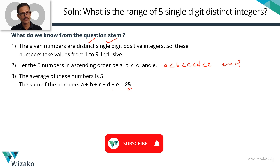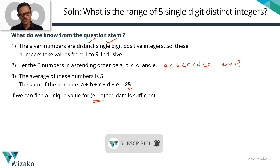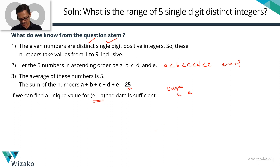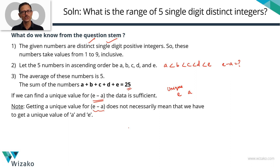The data is sufficient if we can get a unique value for e minus a. If we get a unique e and a unique a, then e minus a will certainly be unique. However, it is not necessary to have a unique e and a unique a to get a unique e minus a.